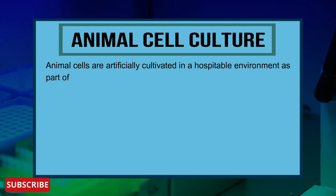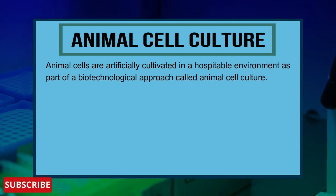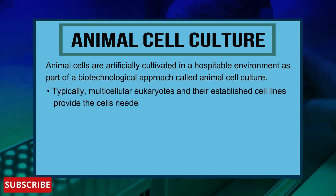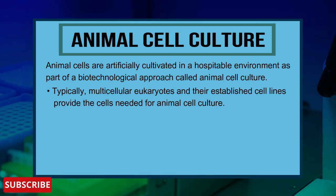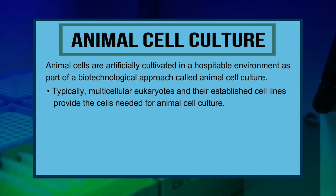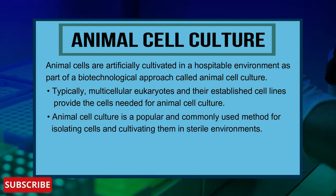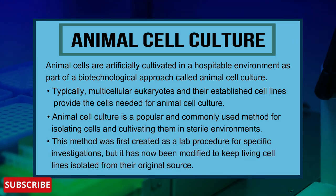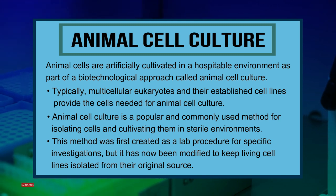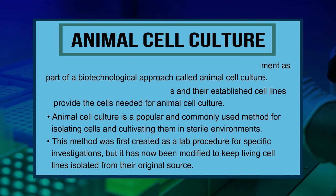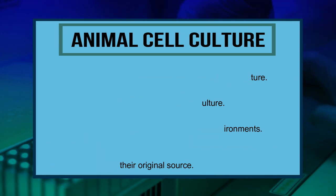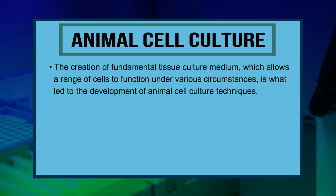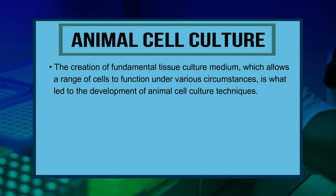Animal cells are artificially cultivated in a hospitable environment as part of a biotechnological approach called Animal Cell Culture. Typically, multicellular eukaryotes and their established cell lines provide the cells needed. This method was first created as a lab procedure for specific investigations but has been modified to keep living cell lines isolated from their original source.